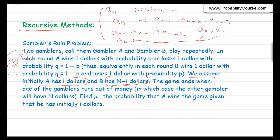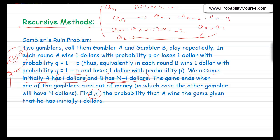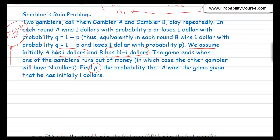The rounds are independent — the coin tosses are independent. The goal is to find P(i), the probability that A wins the game given that he initially has i dollars. In problems like this, where we have a large number of rounds, an interesting and usually good idea is to condition on the result of the first round, or the first coin toss.